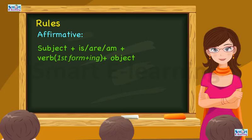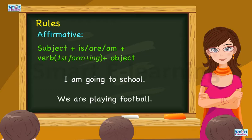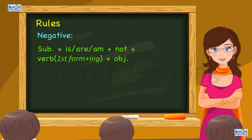Rules - Affirmative: subject plus is, are, am plus verb first form plus ing plus object. I am going to school. We are playing football.